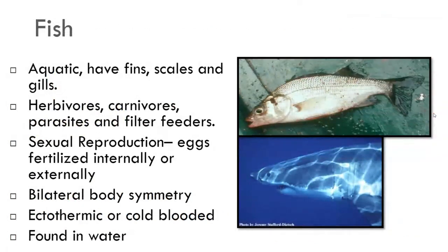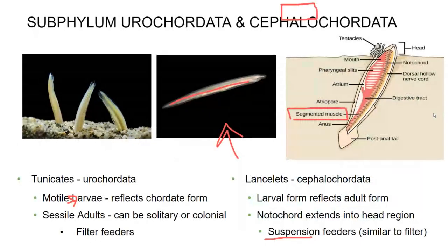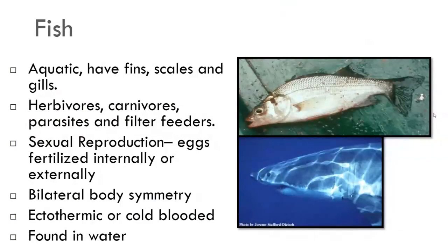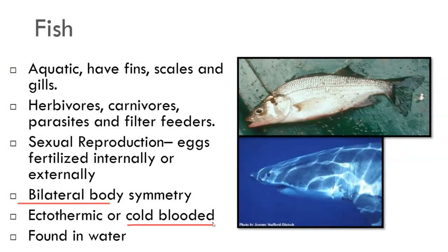Fish are going to be aquatic animals that have fins and scales — very developed compared to the cephalochordates. Fish fill all kinds of different niches, both predator and prey, herbivores and carnivores, both parasites and some filter feeders. They are all going to undergo sexual reproduction but can be fertilized internally or externally — some species just release their sperm. They have bilateral body symmetry, which means they're going to be deuterostomes. They are considered ectothermic, or cold-blooded — they rely on their environment for their temperature.